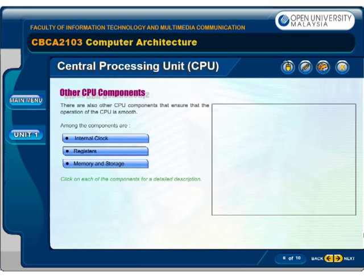There are also other CPU components that ensure that the operation of the CPU is smooth. Among the components are internal clock, registers, and memory and storage. Click on each of the components for a detailed description.